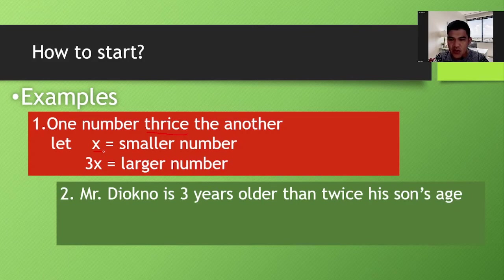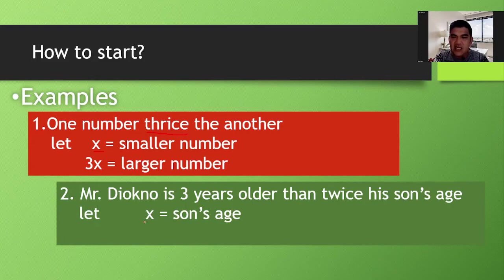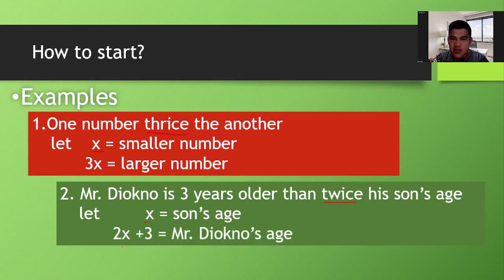Example two: 'Mr. Jockno is three years older than twice his son's age.' Let x equal the son's age. Mr. Jockno's age is found by doubling the son's age and adding three years. The word 'twice' means you double x, giving 2x, and then you add three. So Mr. Jockno's age is represented as 2x plus 3.